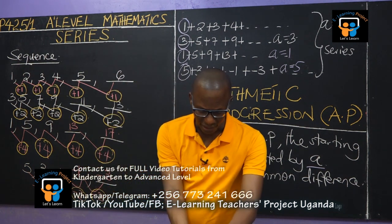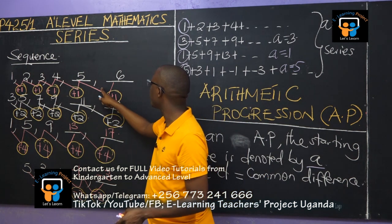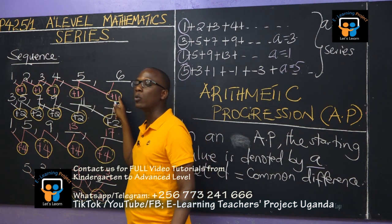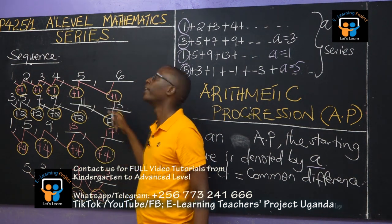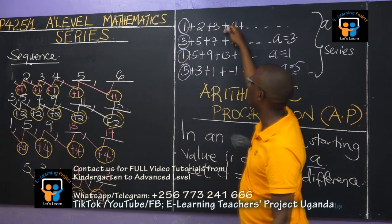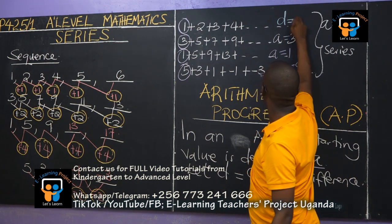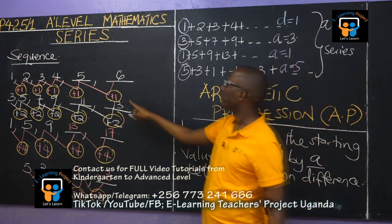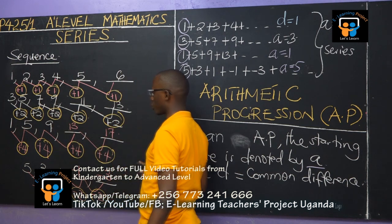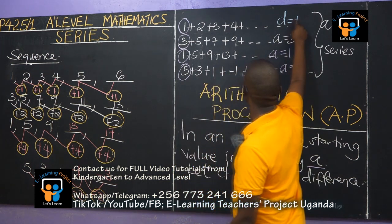So that literally means that in this case, because we're adding a constant 1 everywhere, which formed this sequence — remember, this is the progression we got here — that means that here our D is 1. This is our D for this progression.